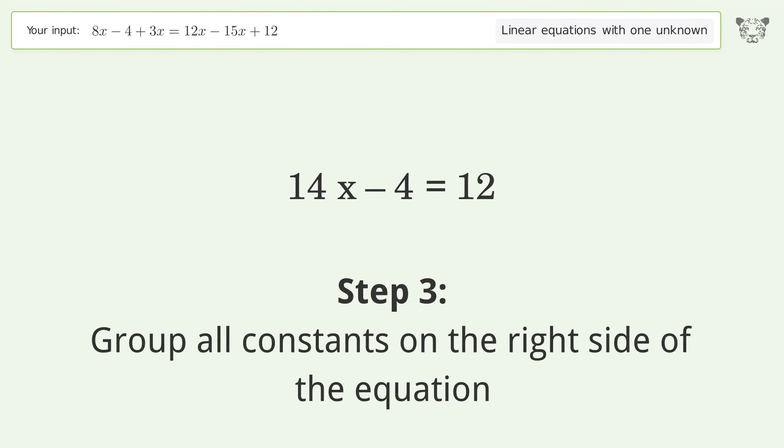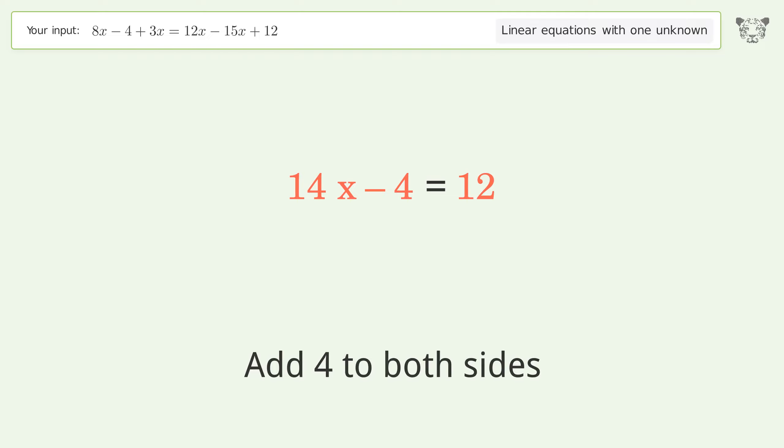Group all constants on the right side of the equation. Add 4 to both sides. Simplify the arithmetic.